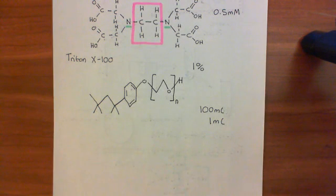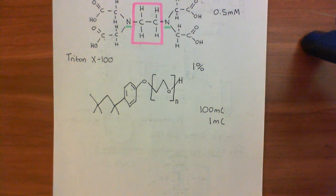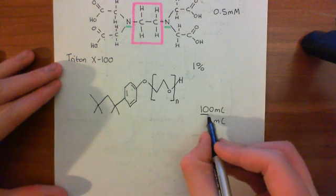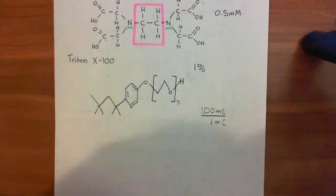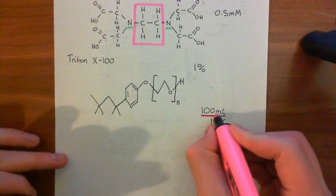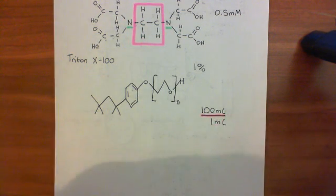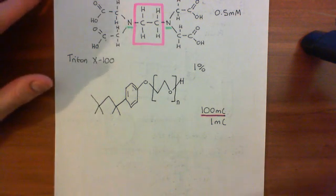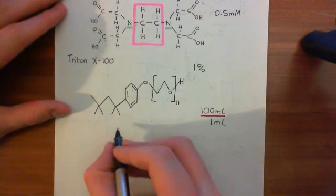Welcome back to this next video in which we are discussing protein extraction from cells. We're currently discussing lysis buffers and how you would make a lysis buffer. We're going to do an example of a calculation. Let's say we want to make 100 milliliters of lysis buffer. We've already discussed that 1 milliliter of that would come from the Triton X100. Now we want to get the correct concentrations of Tris, sodium chloride, and EDTA.